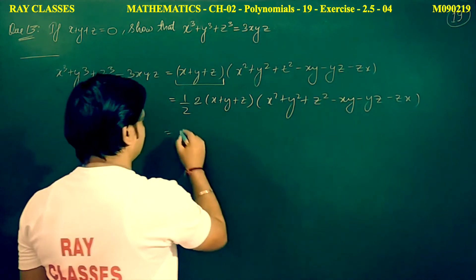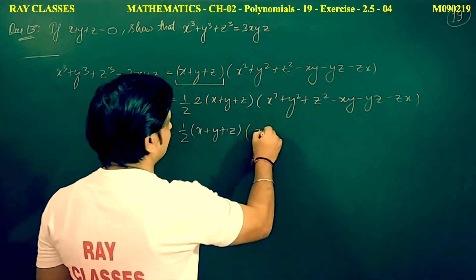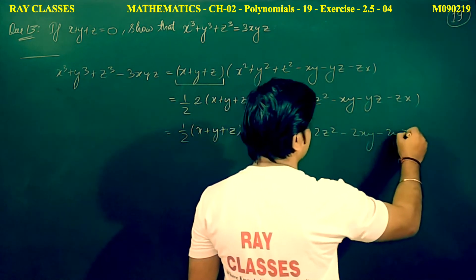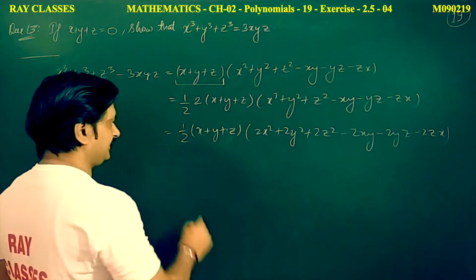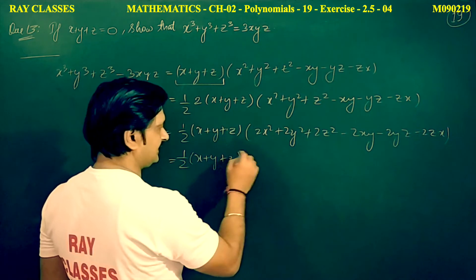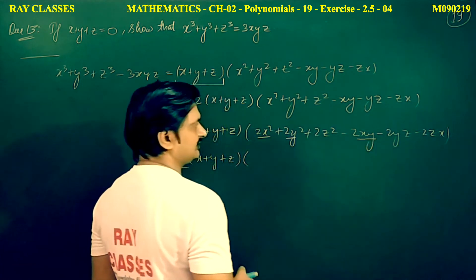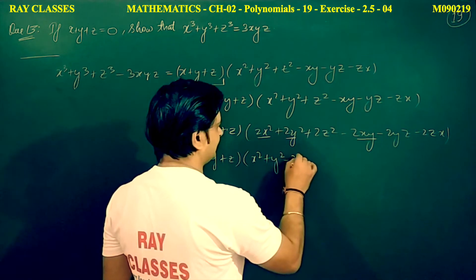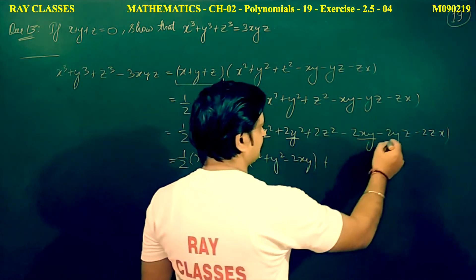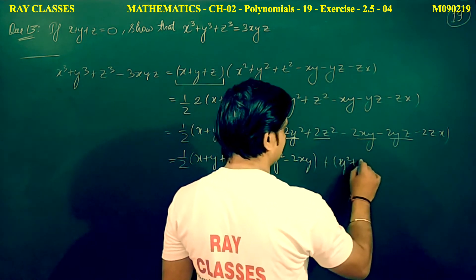This becomes 1/2 times (x plus y plus z) multiplied by (2x squared plus 2y squared plus 2z squared minus 2xy minus 2yz minus 2zx). Now we regroup: x squared plus y squared minus 2xy, and so on.